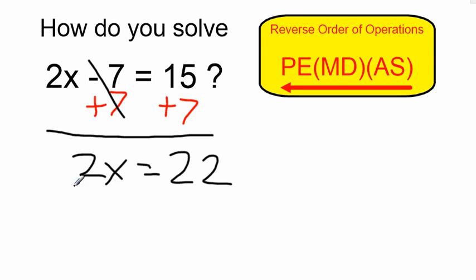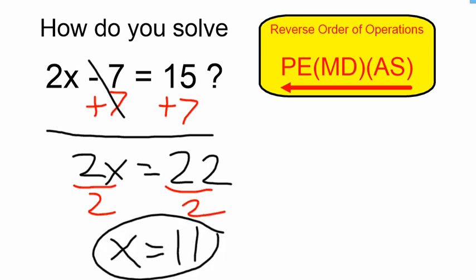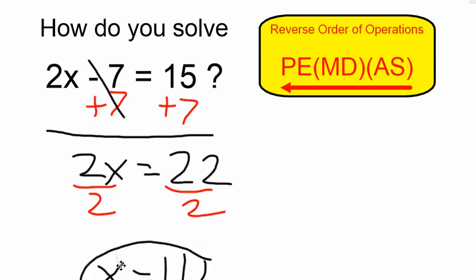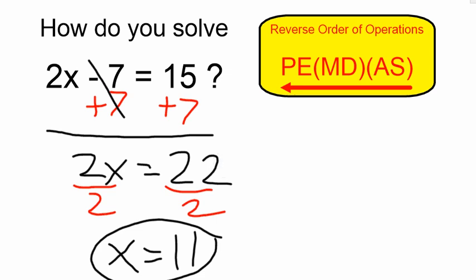Next, I can undo multiplication by 2 by dividing each side by 2. Therefore, x is equal to 22 divided by 2, which is 11.